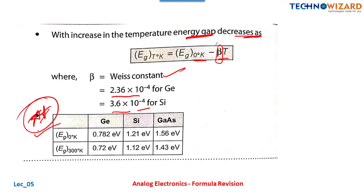This table is very very important. Energy gap at zero degrees Kelvin: germanium = 0.78 eV, silicon = 1.21 eV, gallium arsenide = 1.56 eV (GaAs is used for making LEDs). At 300 degrees Kelvin: germanium = 0.72 eV, silicon = 1.125 eV, gallium arsenide = 1.43 eV. Please remember this table — questions can be based upon it.